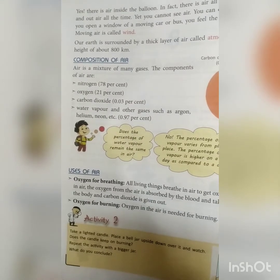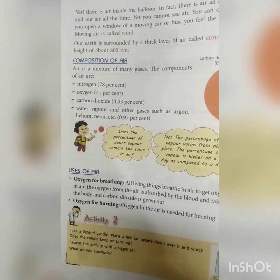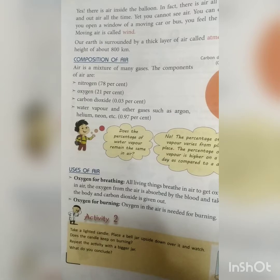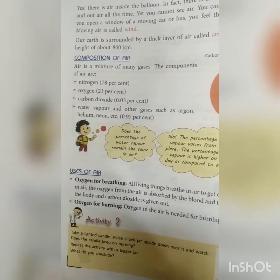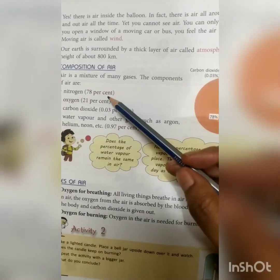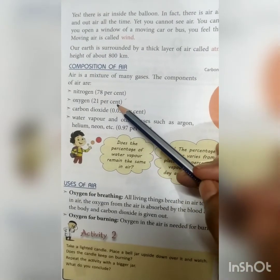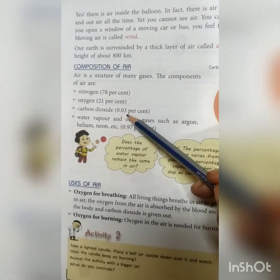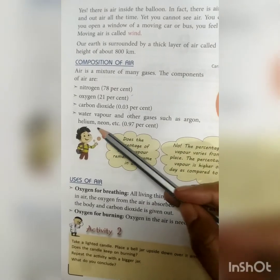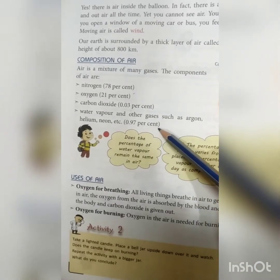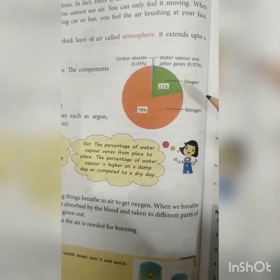The atmosphere of the earth extends up to a height of 800 kilometers. Now we'll discuss the composition of air. Air is a mixture of gases. The components of air are: nitrogen — 78%, oxygen — 21%, carbon dioxide — 0.03%, water vapors, and other gases such as argon, helium, neon, etc. — 0.97%.